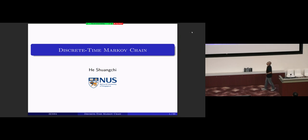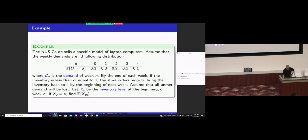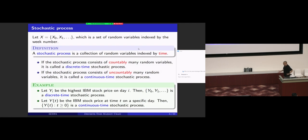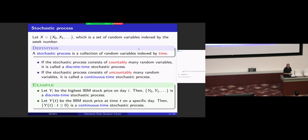Good evening everyone. Last time we began to discuss Markov chains. Maybe we can review some conceptions before we go back to this example. A Markov chain is just a collection of random variables indexed by time. We're interested in how the Markov chain evolves — how this collection of random variables evolve according to time. We're particularly interested in discrete time stochastic processes, which are just a sequence of random variables with an index being the time.